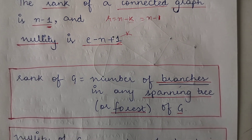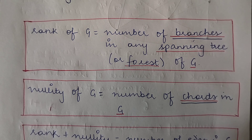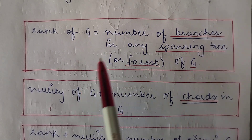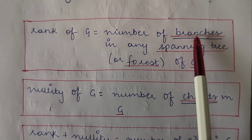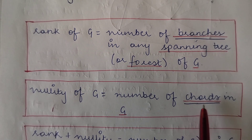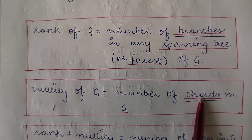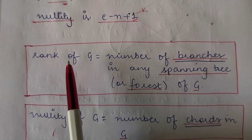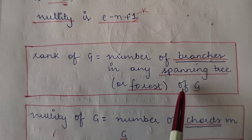This is one way of finding the rank and nullity of a graph. The other way is by calculating the number of branches or the number of cords. Branches are those edges which are part of the spanning tree or the spanning forest. The rank of a graph G equals the number of branches in any spanning tree or spanning forest of the graph.